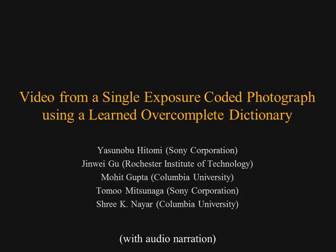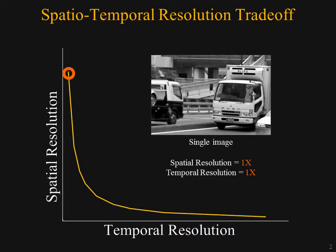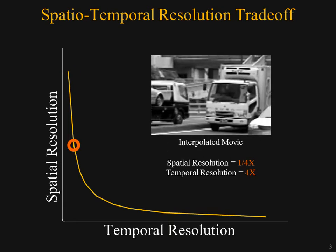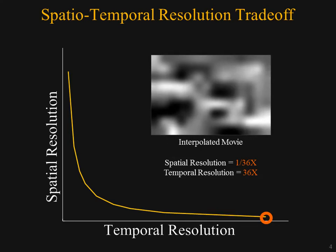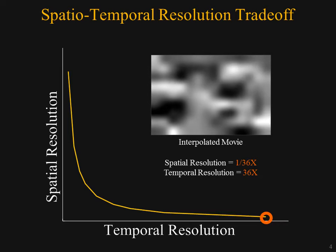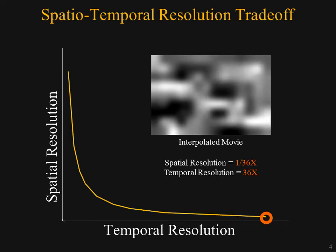We show examples of reconstructing high-speed, high-resolution video from a single-exposure coded image. Here is an example of the trade-off. A camera can either capture a single image with full resolution, or four images by sampling every fourth row. The resulting interpolated movie has a reduced spatial resolution. This is an extreme case — 36 times gain in temporal resolution. Although we can see smooth motion in the movie, the image quality is reduced significantly.